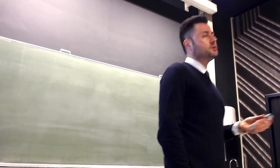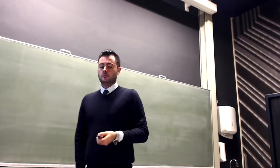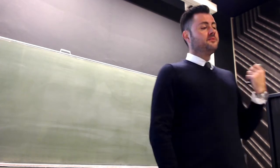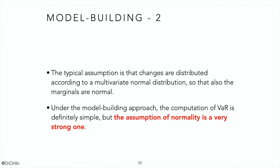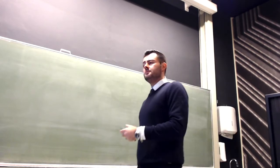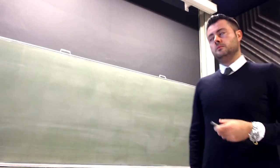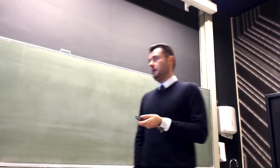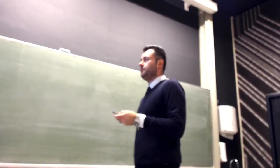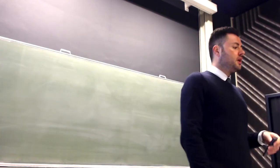The typical assumption is normality. If normality is a very strong assumption at the univariate level — when you just consider one price, one interest rate — when you put them together in a multivariate framework, it's even more dangerous. Because in the multivariate framework, normality essentially never exists unless you are creating an artificial world.